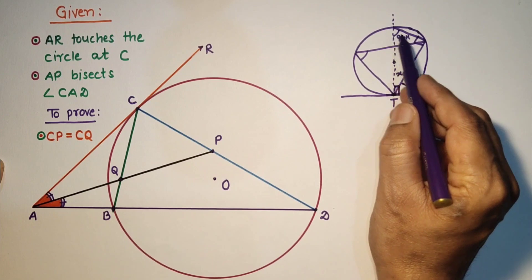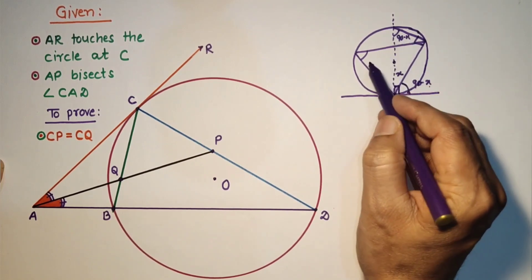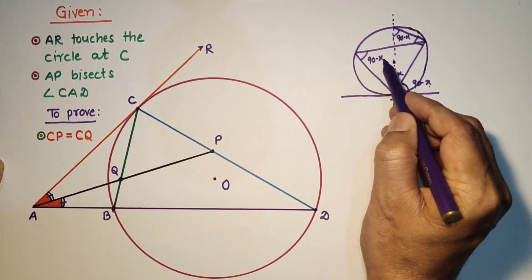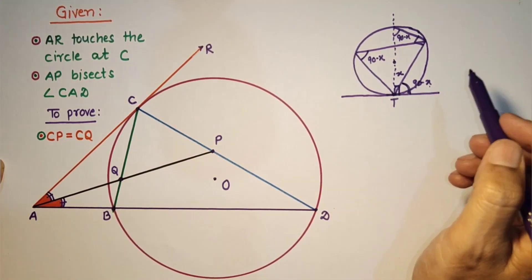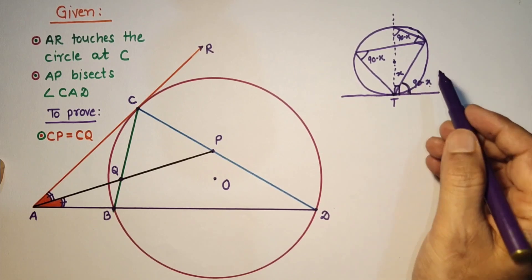And this is the angle subtended by this chord. Same angle will be this 90 minus X. So this angle is equal to this angle. This is called alternate segment theorem. We will use this here.